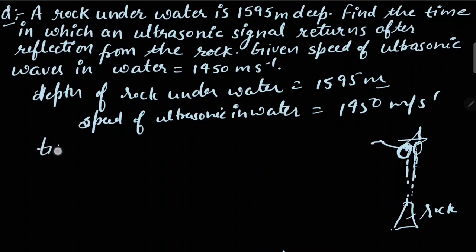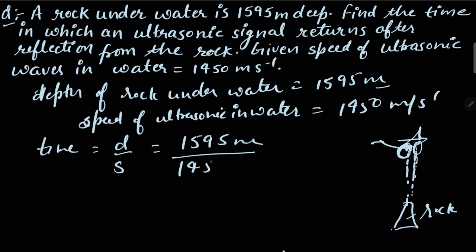सबसे पहले हम time calculate कर लेंगे। Rock का depth हमें given है और साथ में speed given है। हमें पता है कि time = distance / speed। Distance है 1595 meter और speed है 1450 meter per second। यहां से cut करने पर value मिलेगी 11/10, तो time will be 1.1 second।